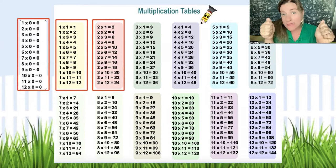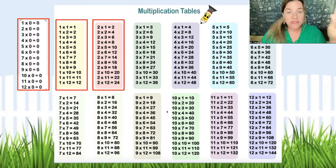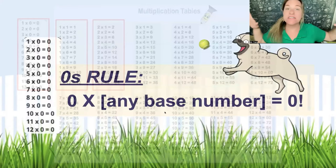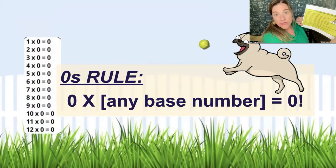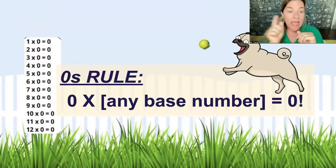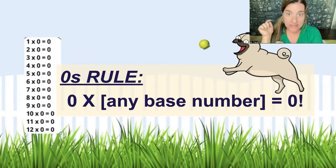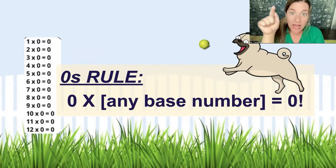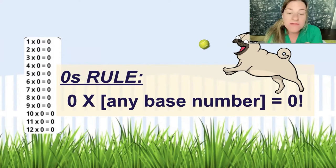We are memorizing, but we're doing it in a mathematical way. Our first rule — the easiest multiplication rule in the whole universe — is the zeros rule. If you take zero times any base number, the answer equals zero. In this class, we have a rule number and a base number — that's the way this system works.